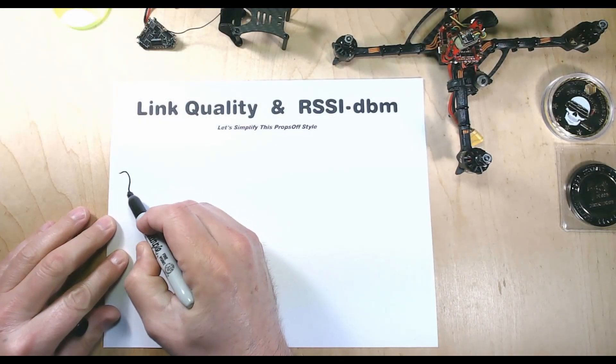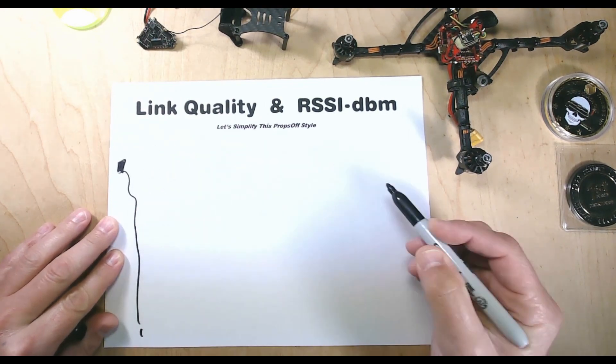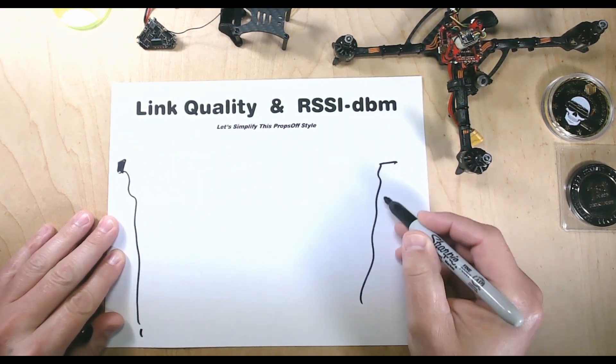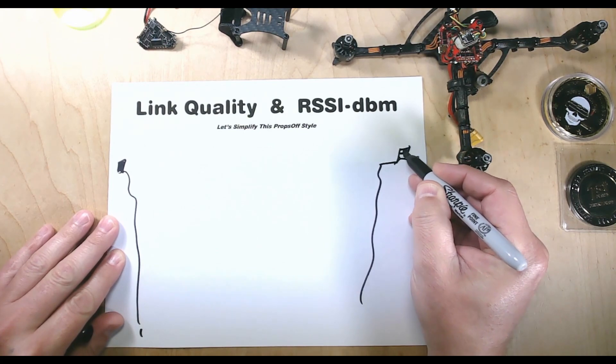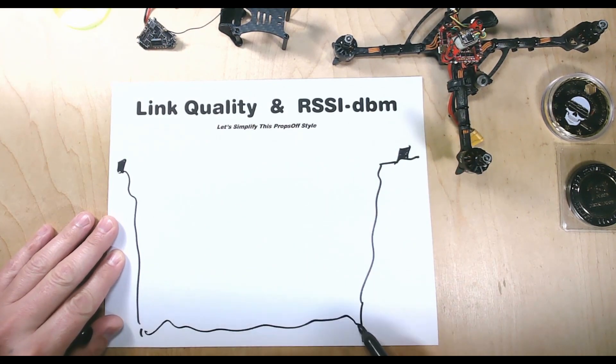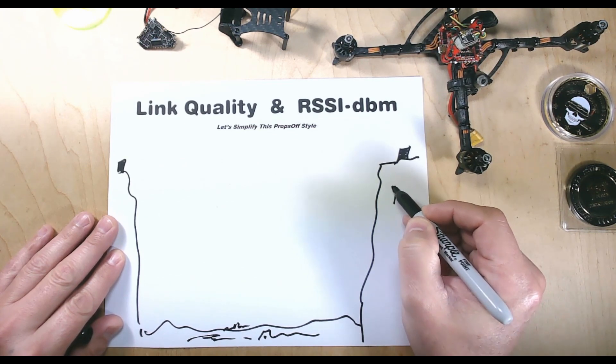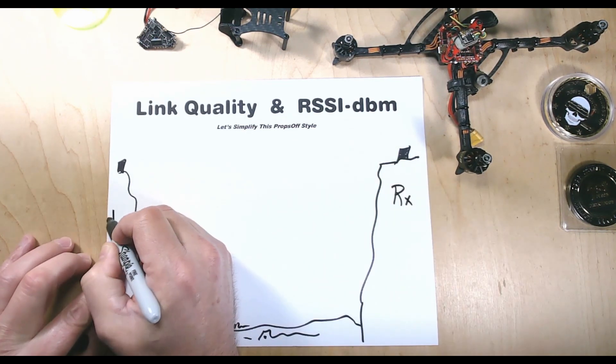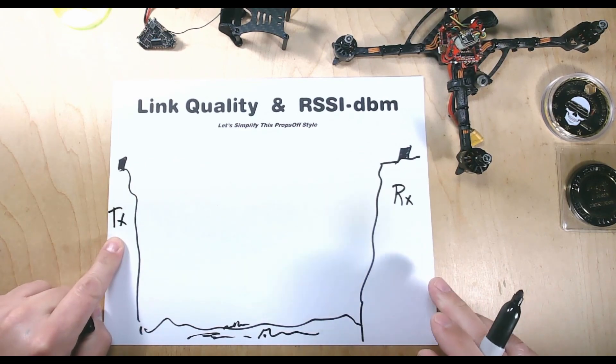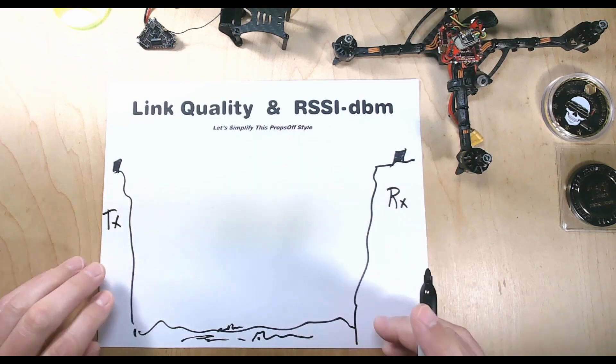Alright, so real quick here, just to give you an example. Let's say we have a cliff here with a little footer foundation, and another cliff here with another foundation. Then let's say we have some water down here with some alligators, all kinds of gnarly stuff. Now let's look at this as our RX and this is our TX—our transmitter, our receiver, our radio, our quadcopter.